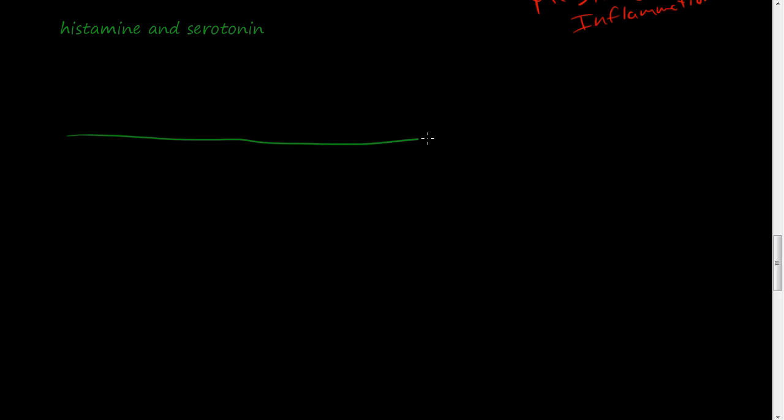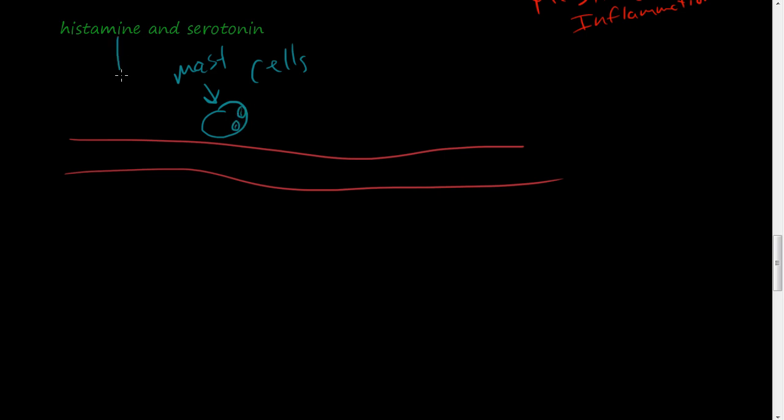If we have a blood vessel here, there are cells that are adjacent to the vessel, and these are called mast cells.